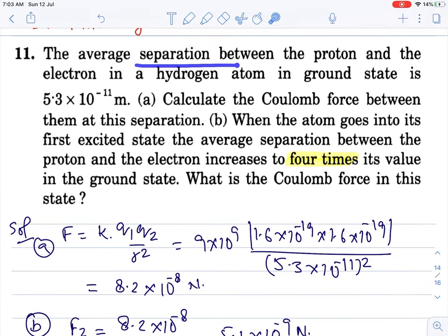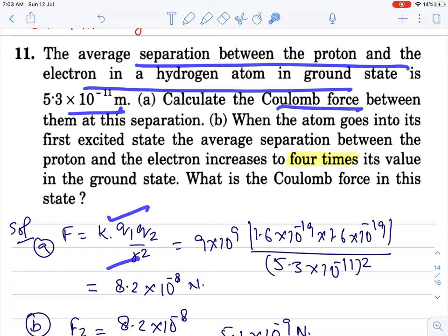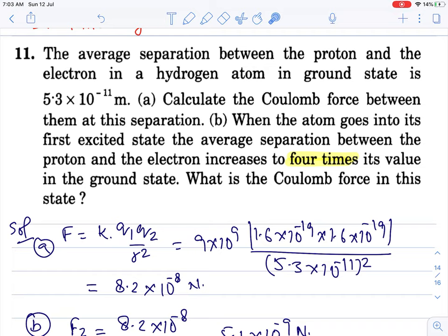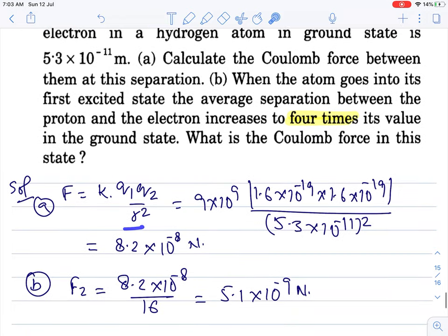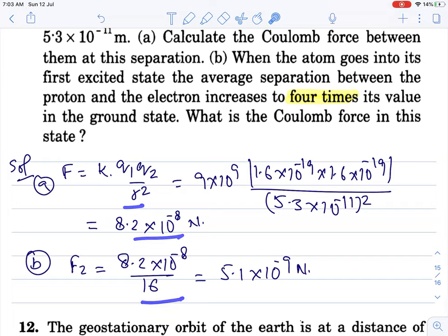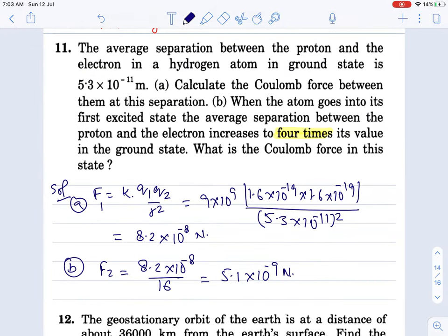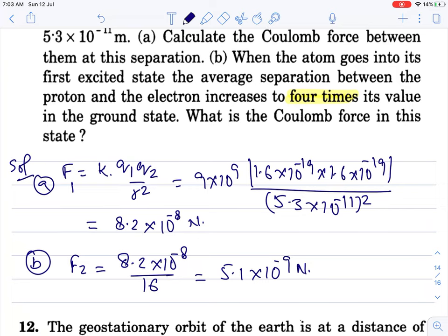Average separation between proton and electron in hydrogen atom in ground state is this much. Calculate the coulomb force. Coulomb force formula k q1 q2 by distance, this much answer is coming. When this goes into first excited state, average separation becomes four times, so niche four ka square 16 aa jayega, so this value ko 16 se divide kar denge. Second case ka force aa jayega, this is force of first case. Direct questions, electrostatics mein phir se repeat hote hain, but practice ke liye yahan pe karlo.